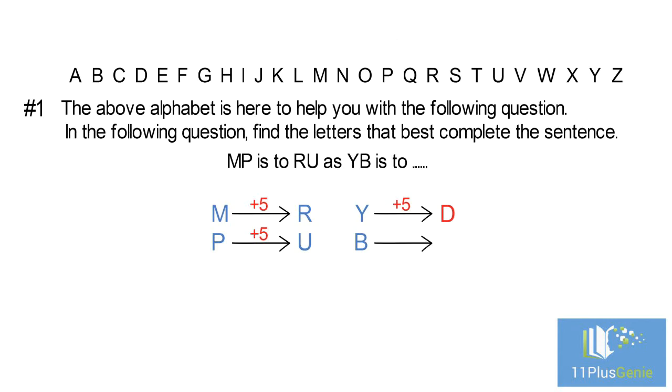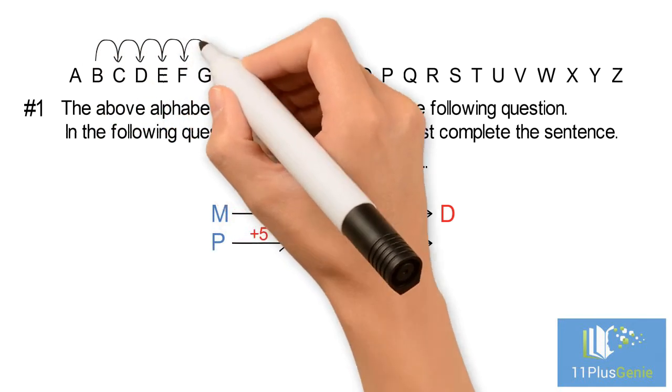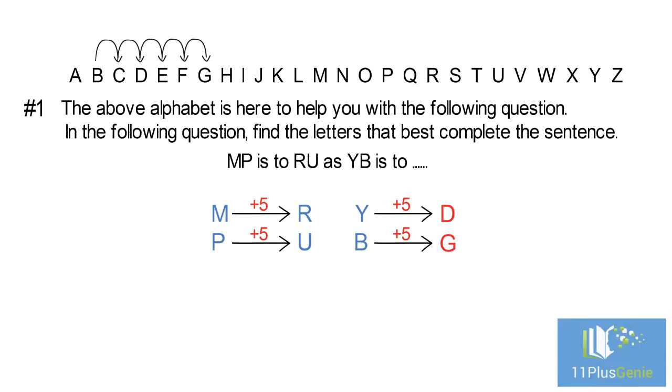For the second letter, we start at B and we must move forward five places, which takes us to G. The missing letter pair is DG.